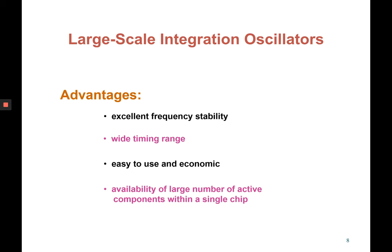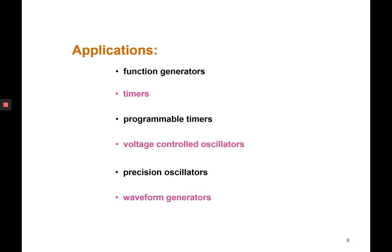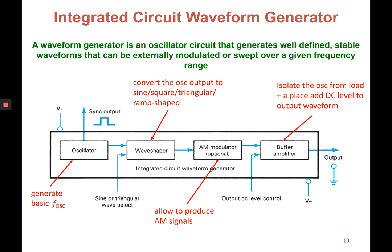There is also the availability of a large number of active components within a single chip — even with only one single chip we can connect it and use it in many applications. Examples of applications that use LSI as an oscillator include function generators, timers, programmable timers, voltage controlled oscillators, precision oscillators, and waveform generators, also known as oscilloscopes.